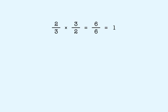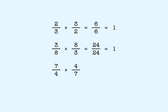Another example. Three-eighths times eight-thirds is twenty-four twenty-fourths, which is equivalent to one. Another one. Seven-fourths times four-sevenths is twenty-eight twenty-eighths, or one.